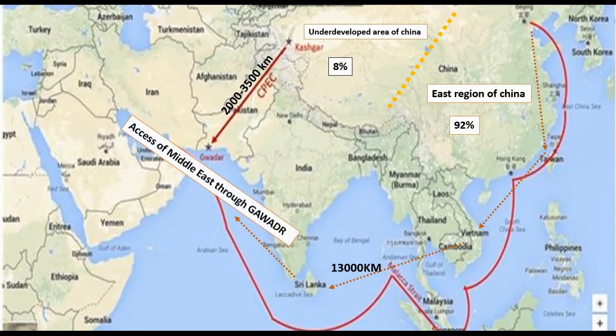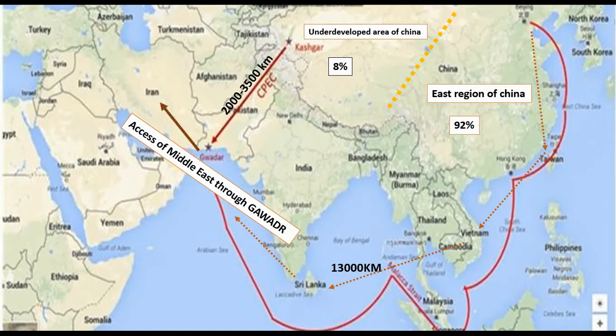The geographical location of Gwadar Port is the main determinant for Pakistan's prosperity. Gwadar is close to Iran and other Middle East countries. It is almost 8 to 10 days route from Gwadar to China after the completion of CPEC. Other countries like Russia also use the CPEC route to access Middle East countries. China accesses European countries through CPEC as well.